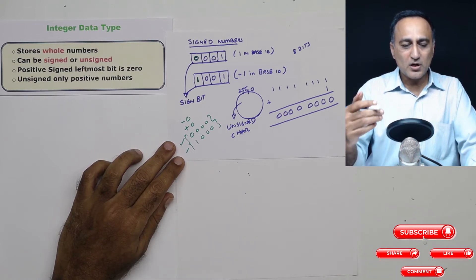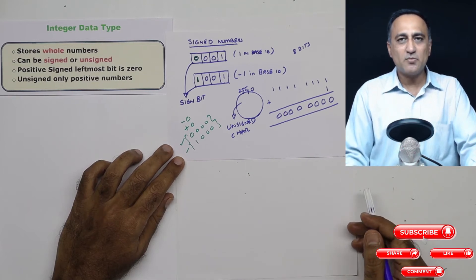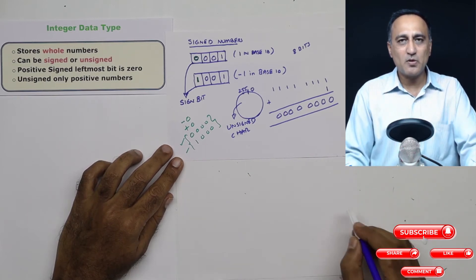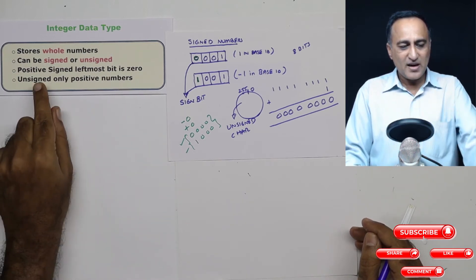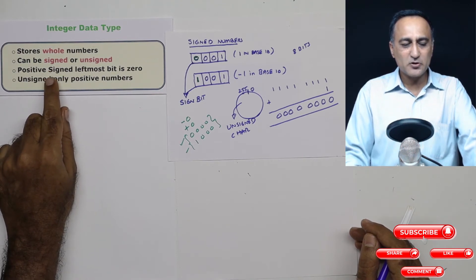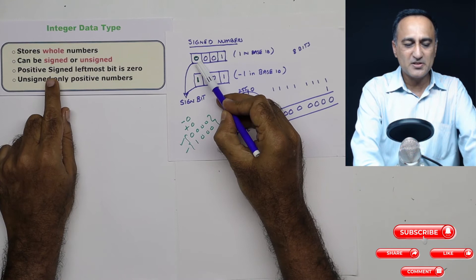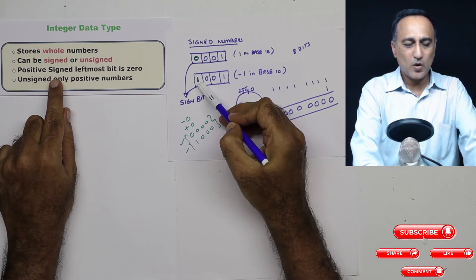So in order to overcome the problem with this particular representation, we use something called as one's complement or the very most commonly or popularly used two's complement method. Now when we have a positive number, if it is a signed integer and if it is a positive number, in that case this bit will be zero. Otherwise, if it is a negative number, this bit will be one.